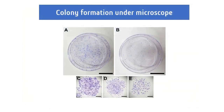This is how a colony appears under the microscope. Images A and B show cells seeded in a six-well plate, and when zoomed in under the microscope, you can see images C, D, and E showing the colony morphology.